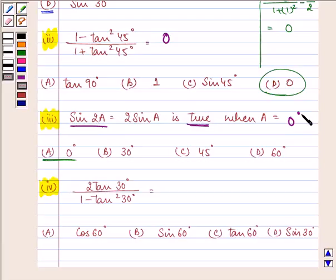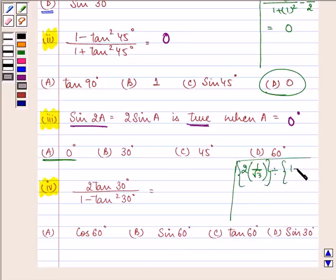And proceeding on with the last and final part. Here we have 2 tan 30 is 1 by root 3, getting divided by 1 minus tan square 30 degree. It will be 1 by root 3 the whole square that will be equal to 1 by 3.